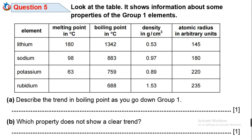Question 5. Look at the table — it shows information about some properties of the group 1 elements. Part A: Describe the trend in boiling point as you go down group 1.